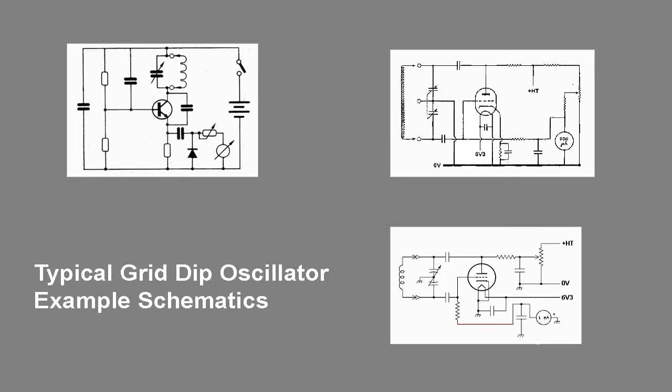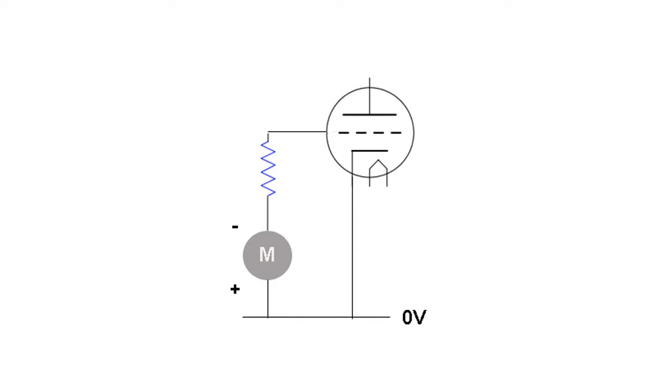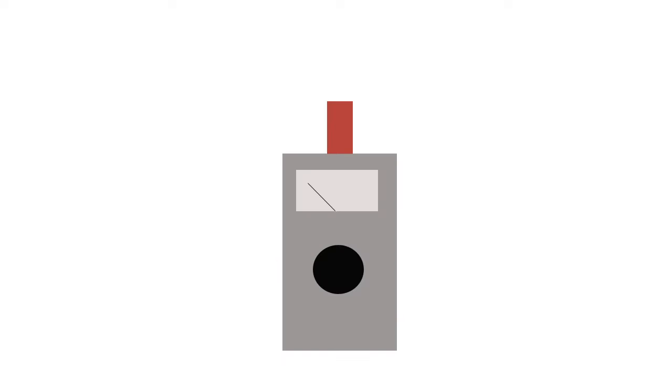There are many ready-made variants available, though they're not necessarily cheap. The name grid dip oscillator originated from valves or vacuum tubes, where the voltage through the grid circuit resistor is measured. Modern GDO variants contain transistors of course.